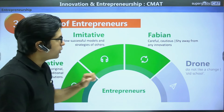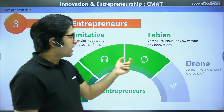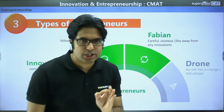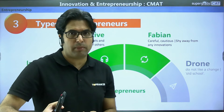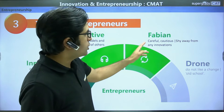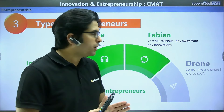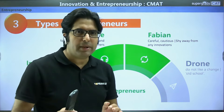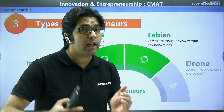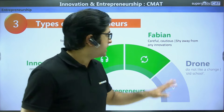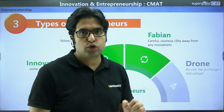The next category is called Fabian entrepreneurs. These are entrepreneurs who are very careful and cautious in their approach. They will typically shy away from innovations — they will not take up anything new straight away. They will take time, be careful, and deliberate cautiously. They are less innovative compared to innovative entrepreneurs and focus more on standard, tried and tested methods.